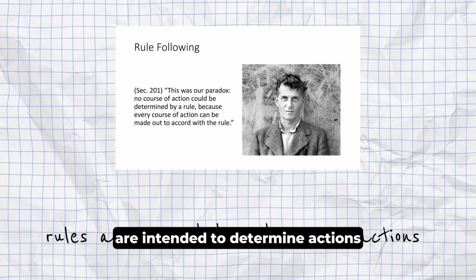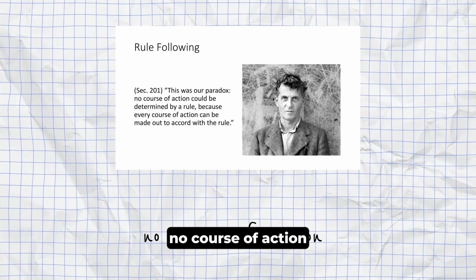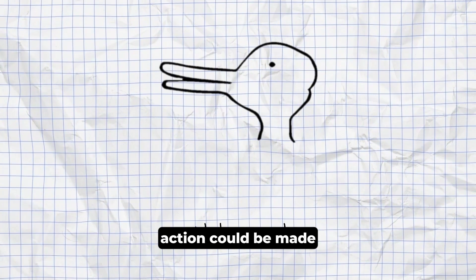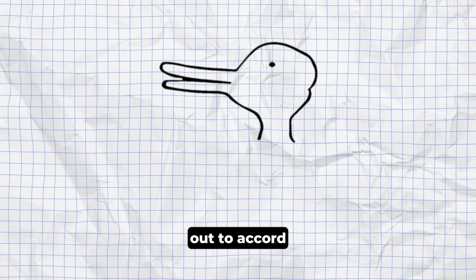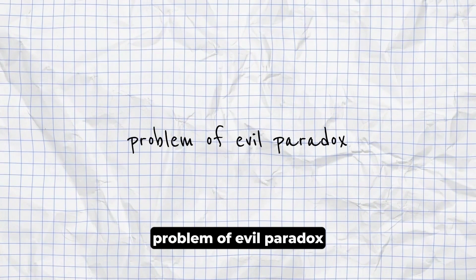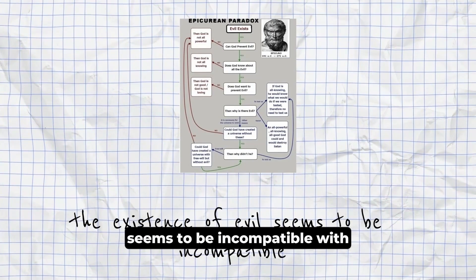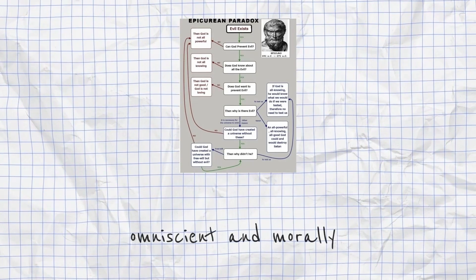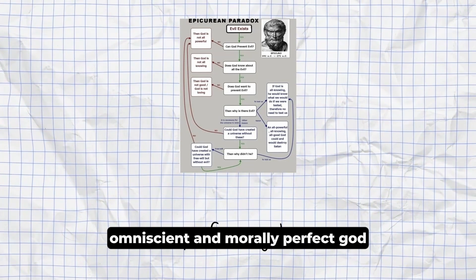Rule Following Paradox. Even though rules are intended to determine actions, no course of action could be determined by a rule, because any course of action could be made out to accord with the rule. Problem of Evil Paradox. The existence of evil seems to be incompatible with the existence of an omnipotent, omniscient, and morally perfect God.